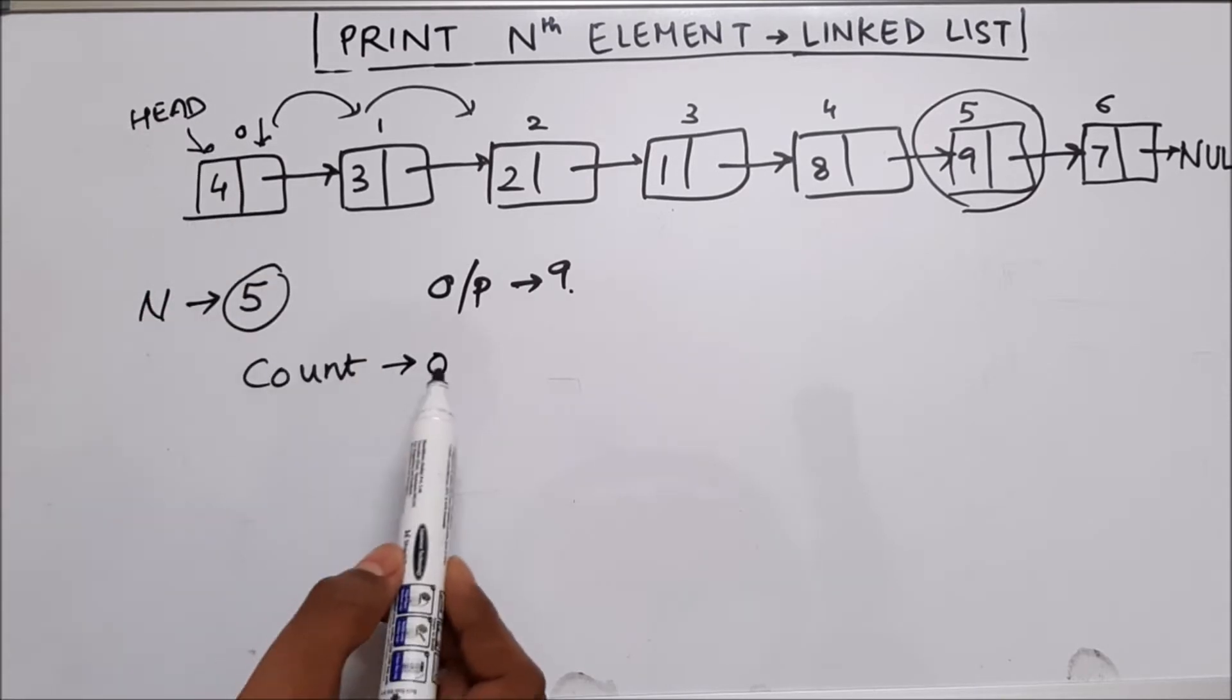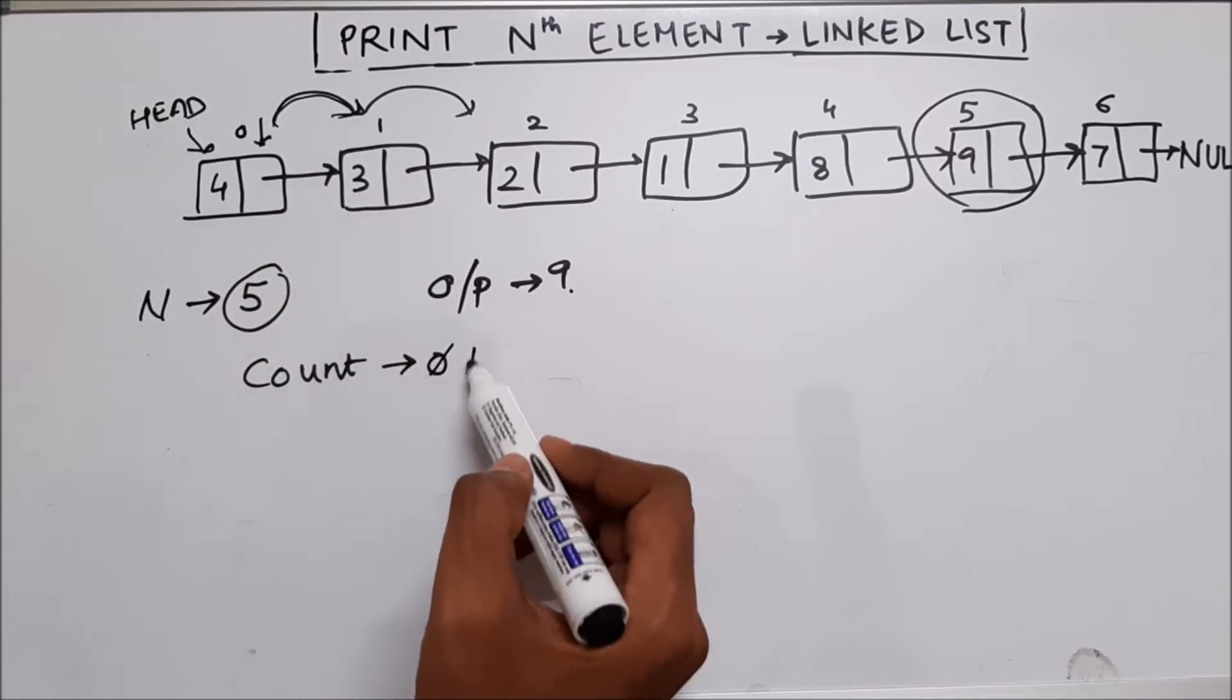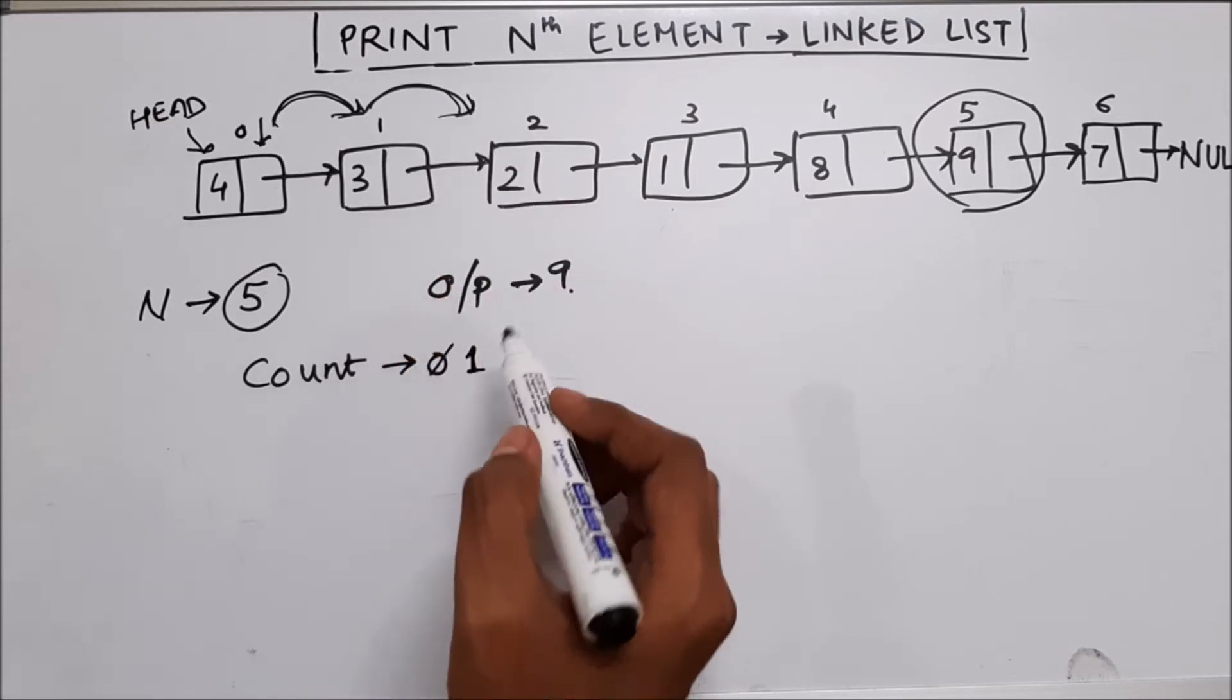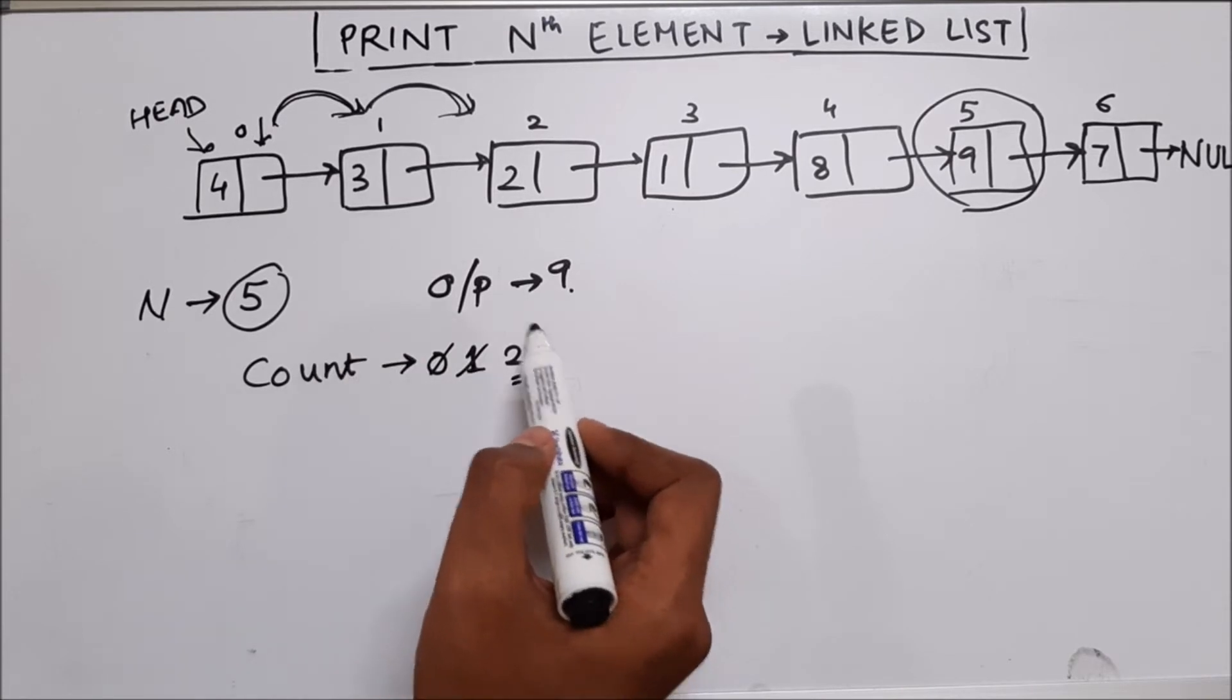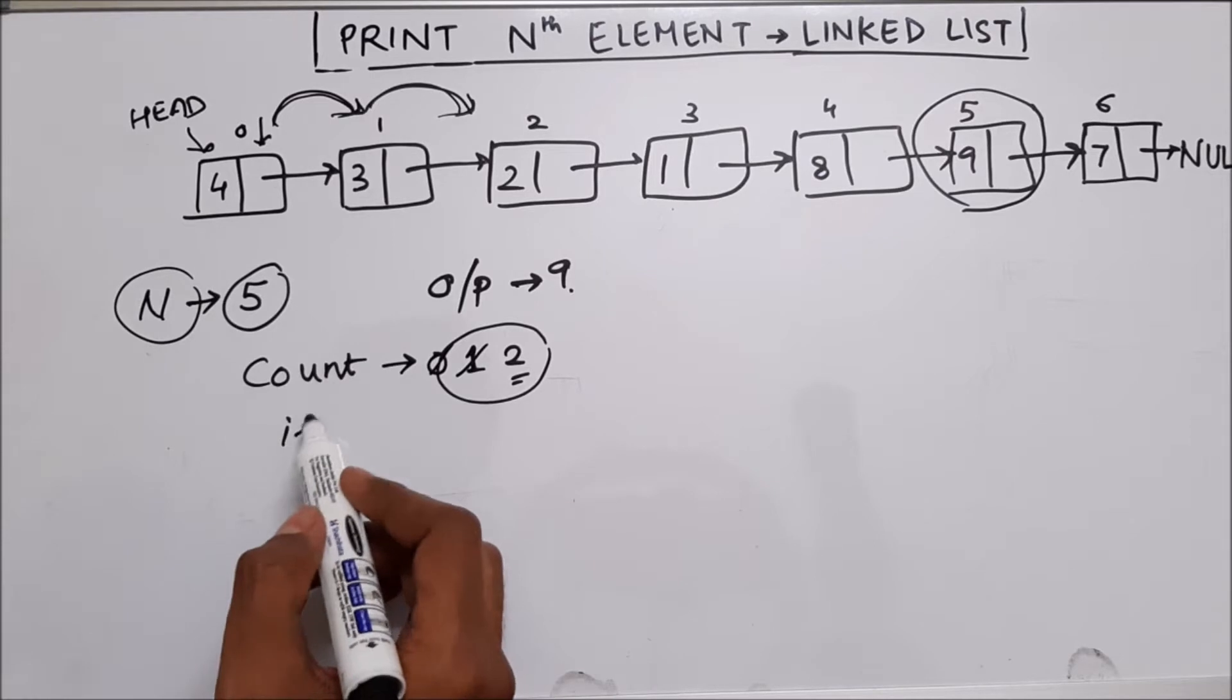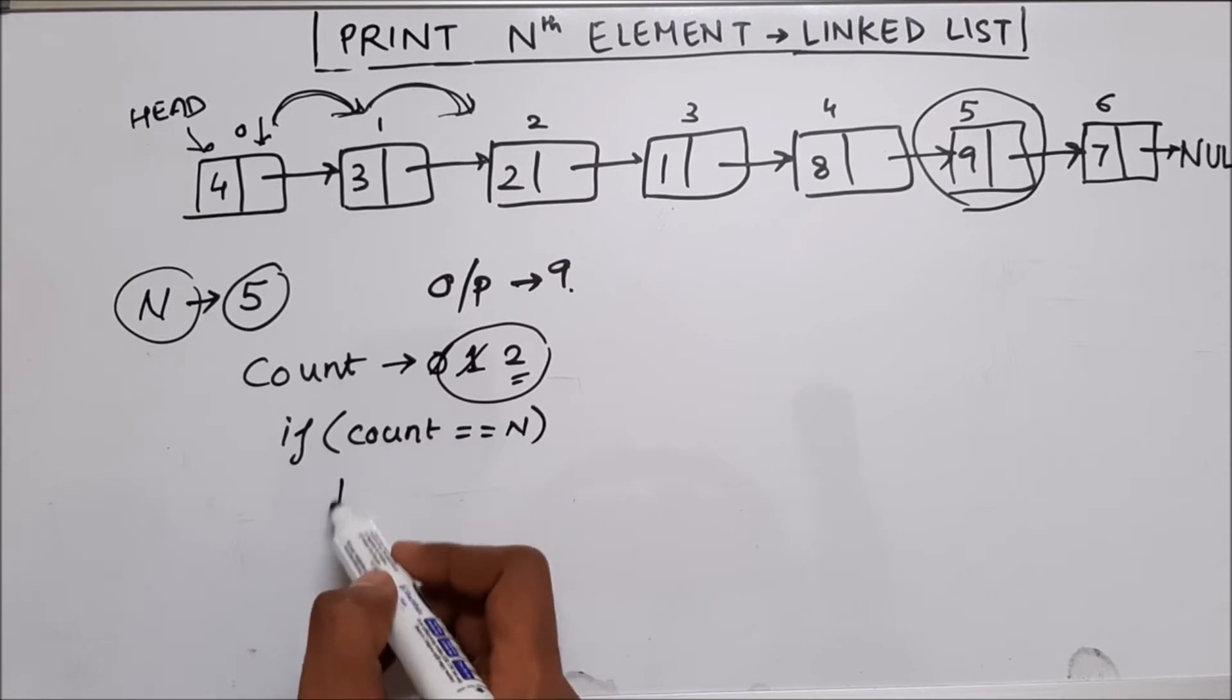So when we are starting, it will be zero. So we are in the zeroth node. When we move to the next node, we will increment count to one. So again, we move to the next element, we will increment the count. So we will keep on incrementing the count. And also we will check if this count is equal to n. So we have to print.